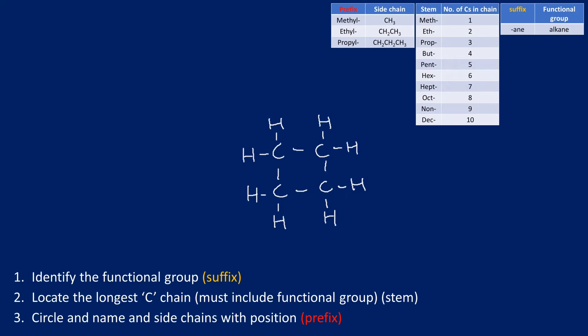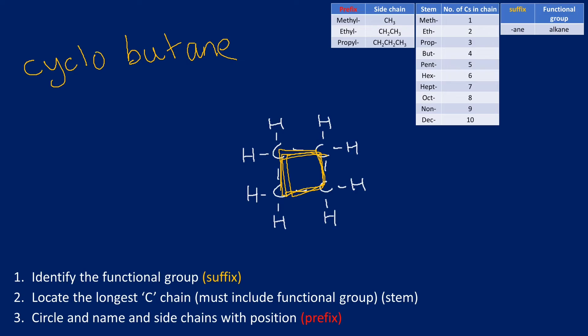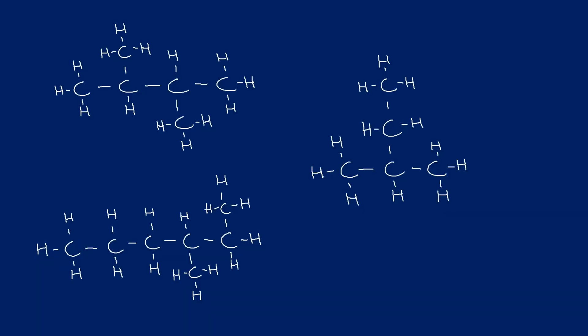The final example is a more unusual one — it may be slightly beyond the Unit 5 specification, but it's best to be over-prepared. This is a carbon chain of four arranged in a ring — a cyclic structure. Four carbons gives 'but', it's an alkane so 'ane', but because it's cyclic we call it cyclobutane: a cyclic four-carbon alkane.